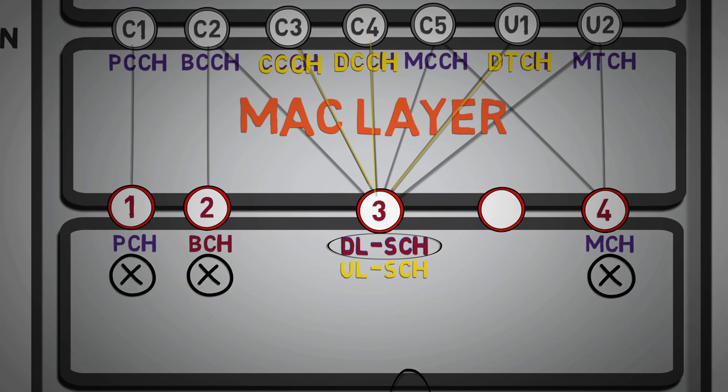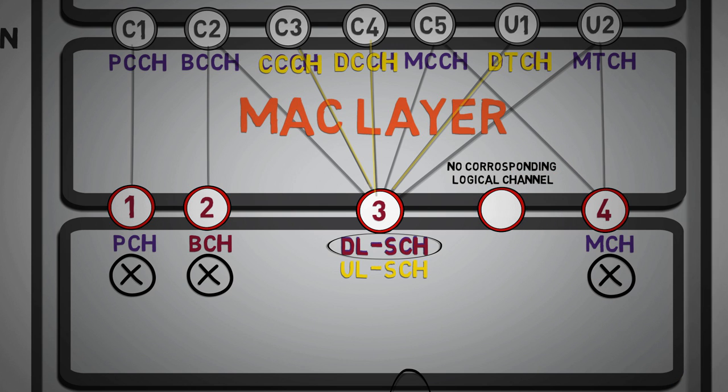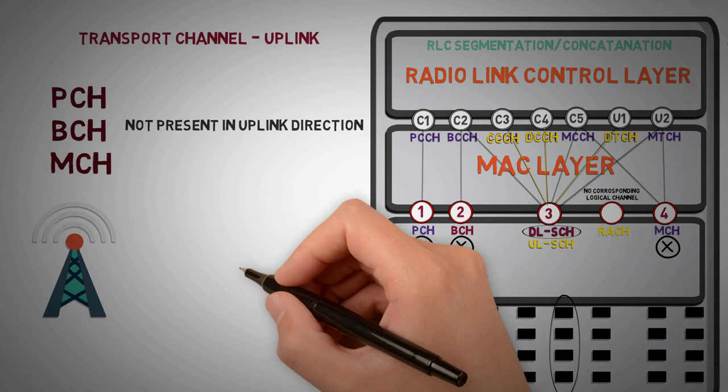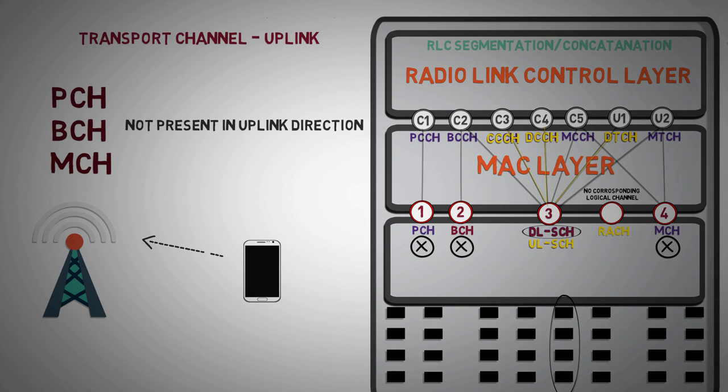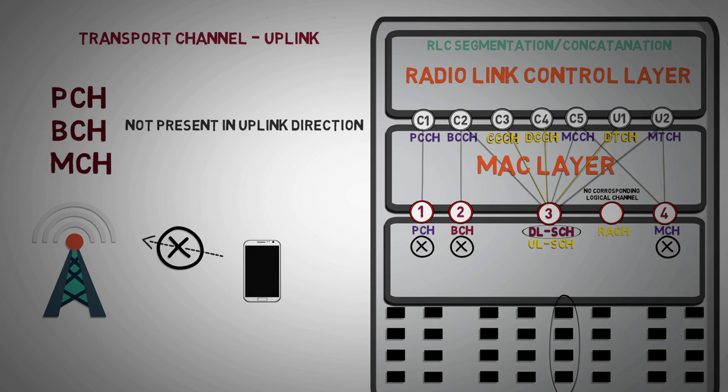However, there is one more channel in transport that has no corresponding logical channel in uplink direction. That is random access channel. At the initial stages, the user is not synchronized in uplink, and user cannot send any data without getting synchronized in uplink direction. So random access process is initiated for uplink synchronization.